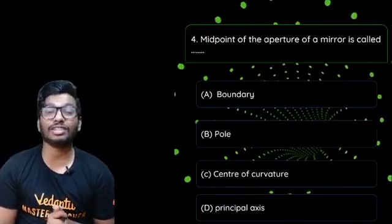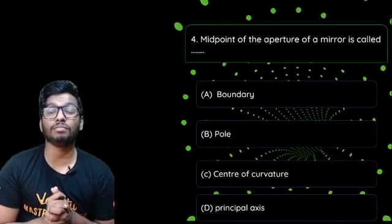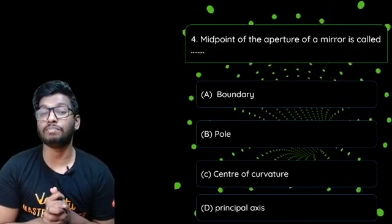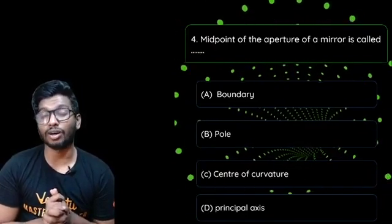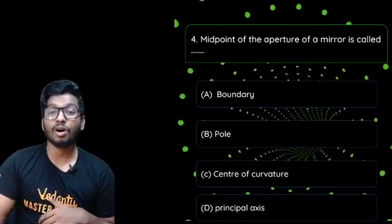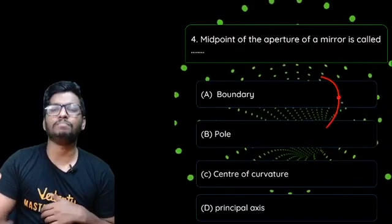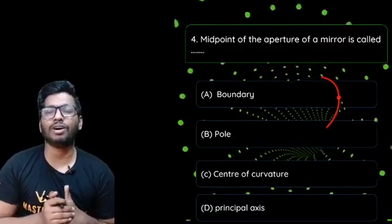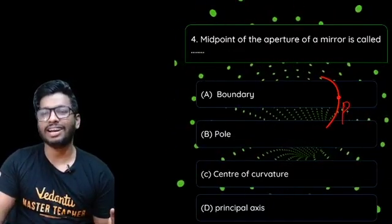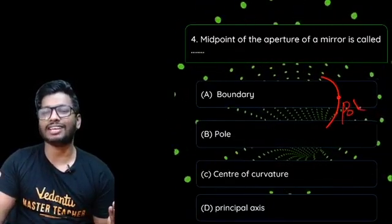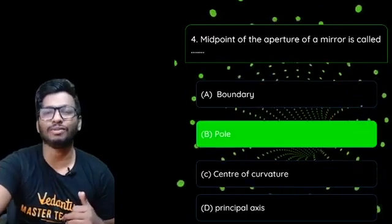Last question: The midpoint of the aperture of the mirror is called — boundary, pole, center of curvature, or the principal axis? The answer is the pole. The midpoint of the aperture of the mirror is called the pole. Very, very simple question.